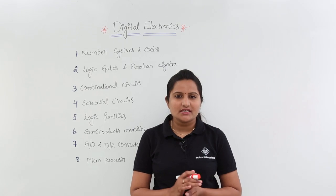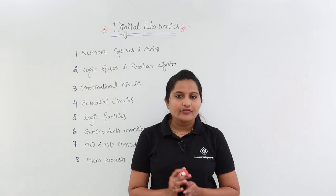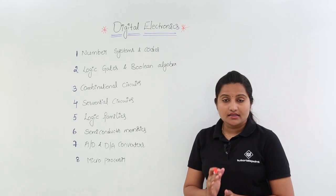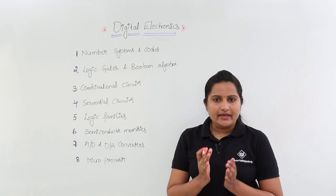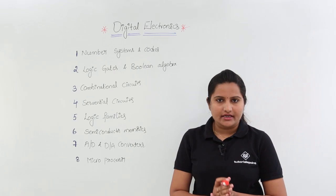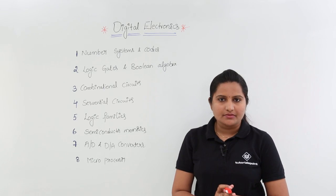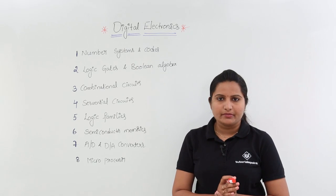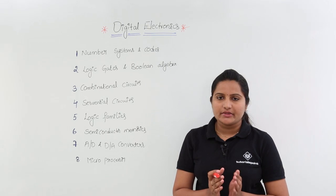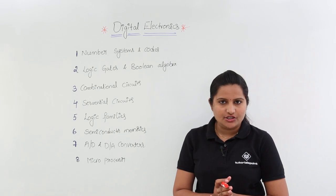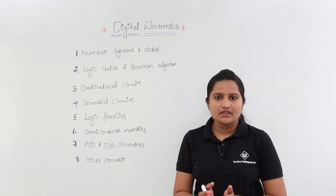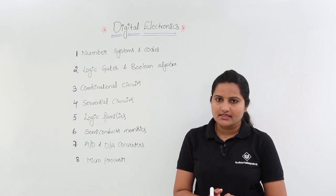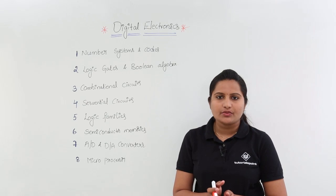In this video series we are going to discuss digital electronics, which covers these topics. See the topics here: number systems and codes. Under that we are going to cover the basic number systems like binary, octal, decimal and hexadecimal, and conversions from one number system to another. After that, binary arithmetic — that means addition, subtraction, multiplication and division — and we are also covering codes like BCD, XS3 and Gray code.